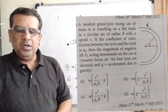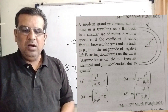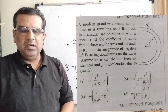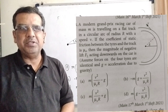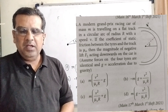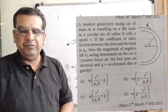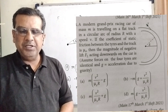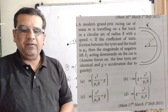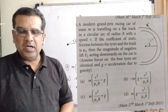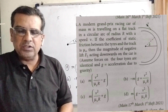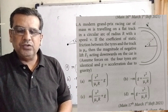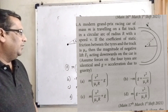Now here is the question. A modern Grand Prix racing car of mass m is traveling on a flat track in a circular arc of radius R with a speed V. If the coefficient of static friction between the tires and the track is μs, then the magnitude of the negative lift force fl acting downward on the car is — assume forces on the four tires are identical and g equals acceleration due to gravity.